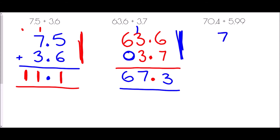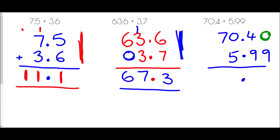Finally in decimal addition, 70.4 plus 5.99. I line up the decimal points. Because 70.4 has no hundredths digit, that is effectively 0, so the top becomes 70.40. Then 0 plus 9 is 9; 4 plus 9 is 13, carry the 1; 1 plus 0 plus 5 is 6; and 7 plus 0 is 7. So the answer is 76.39.